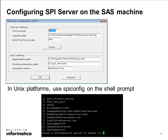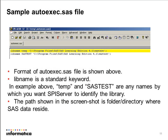If your SAS database is running on a UNIX platform, you can use the SPI config on the shell prompt to configure the same properties. Here is a sample autoexec.sas file format. Libname is a SAS standard keyword. In the example, temp and sas_test are names by which you want the SPI server to identify the SAS libraries. The paths mentioned using these names are folders or directories where the SAS data reside on the SAS database.